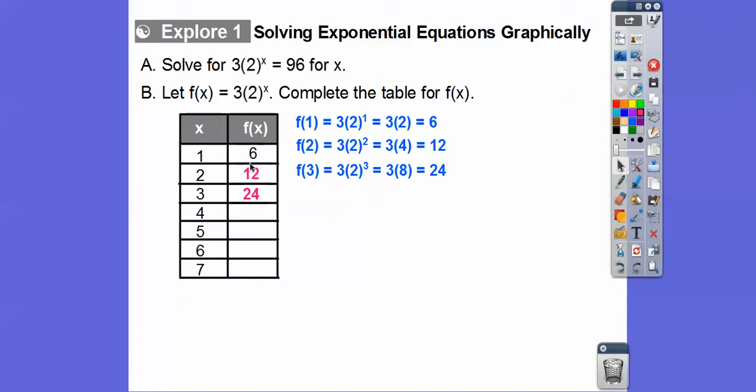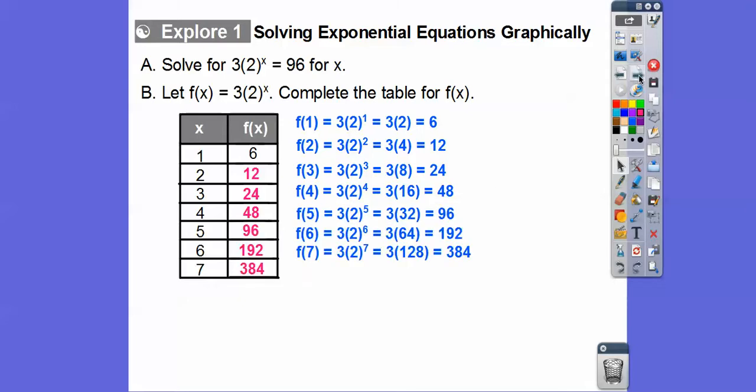Can you see? These are just doubling. 6 times 2 is 12. 12 times 2 is 24. So if we multiply 24 times 2, it should get us 48, and it does. When we plug in 2 to the 4th is 16, and 3 times 16 is 48. So there's the rest of them right there. So 96, and just keep doubling. 192 and then 384.